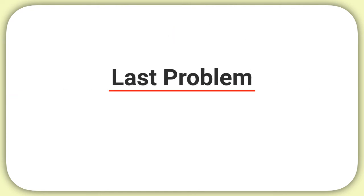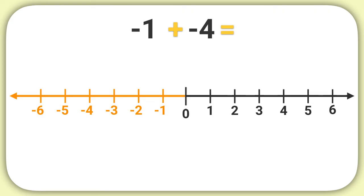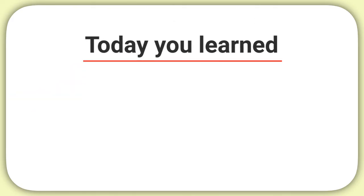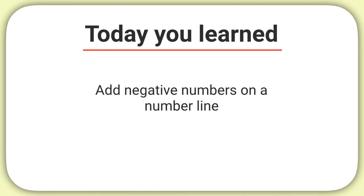Here's your last problem for this video. What is negative 1 plus negative 4? We start at negative 1. Then we're adding a negative number. Remember, when you add a negative, you're walking backwards on the number line. So we walk backwards 1 space, 2, 3, 4. We can see we're at negative 5. So negative 1 plus negative 4 is equal to negative 5. Today you learned how to add negative numbers on a number line.